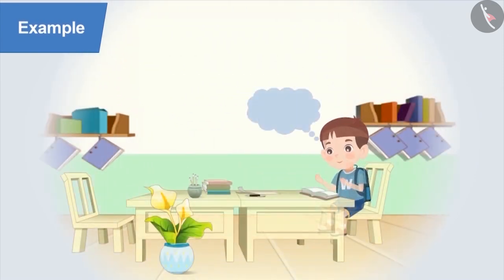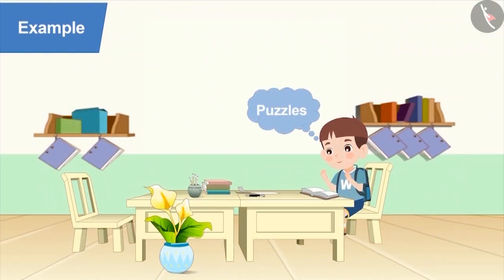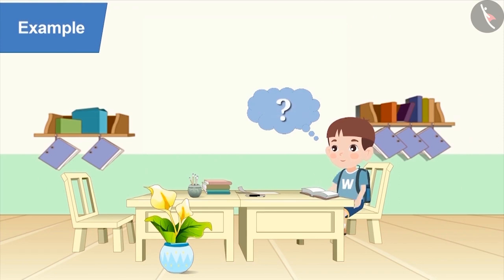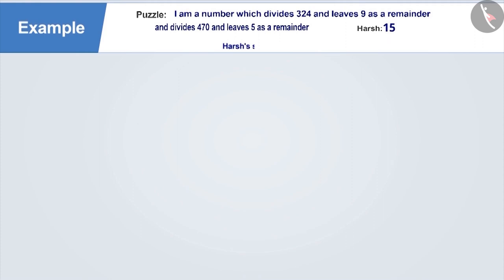Next example. Harsh loves to solve puzzles. One day, he found a puzzle in a book. The puzzle was: I am a number which divides 324 and leaves 9 as a remainder and divides 470 and leaves 5 as a remainder. He got 15 as a solution. Can you tell whether he is correct or wrong?